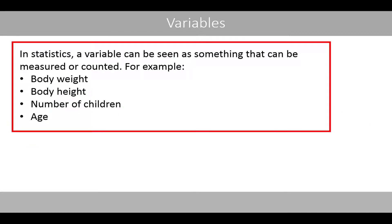In statistics, a variable can be seen as something that can be measured or counted. For example, body weight, body height, number of children, and age are examples of variables.